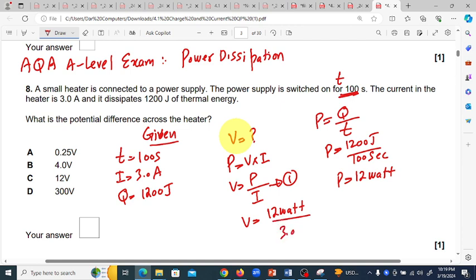We solve to get 4 volts. The voltage is 4 volts. The correct option is 4.0 volts, so option B is correct. Thank you.